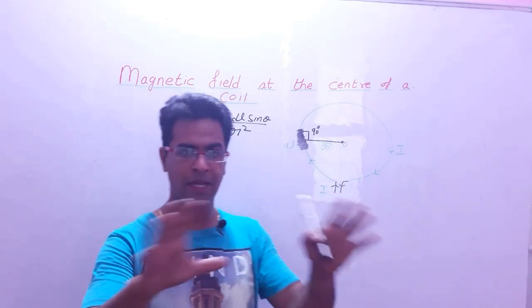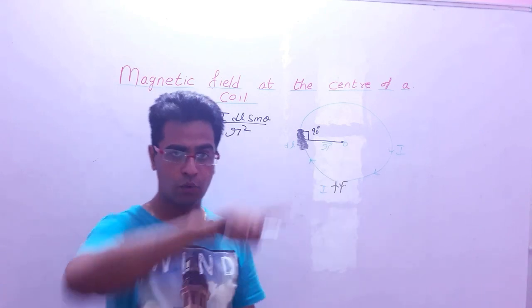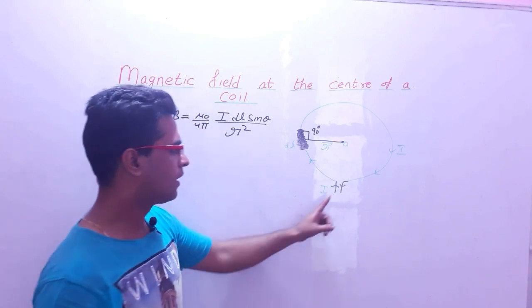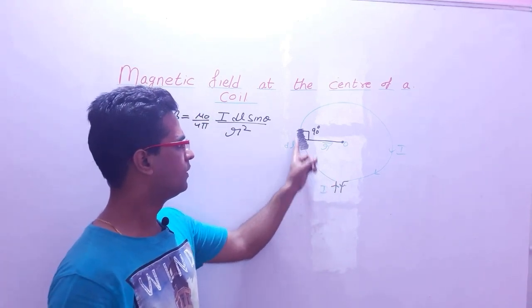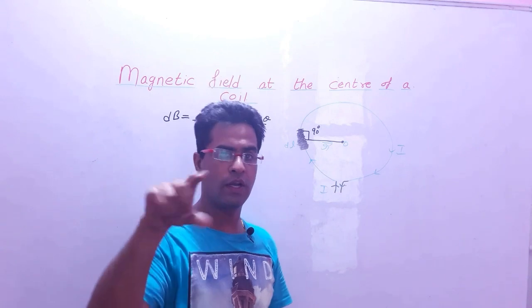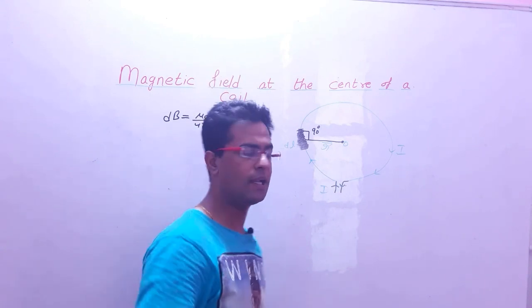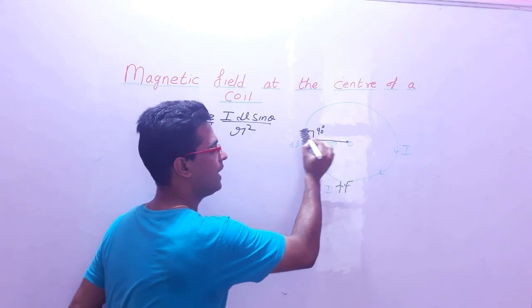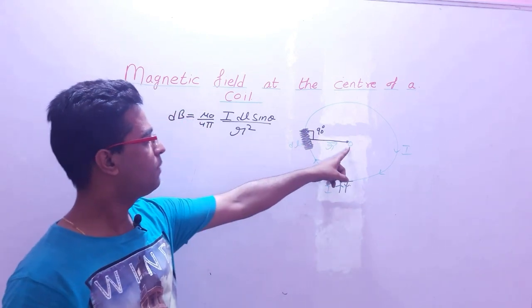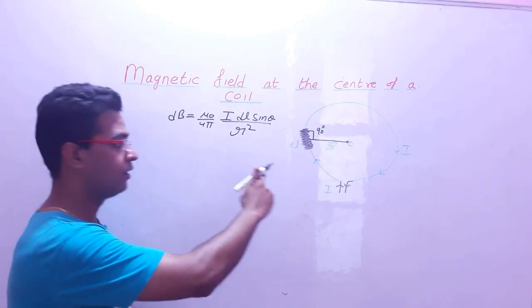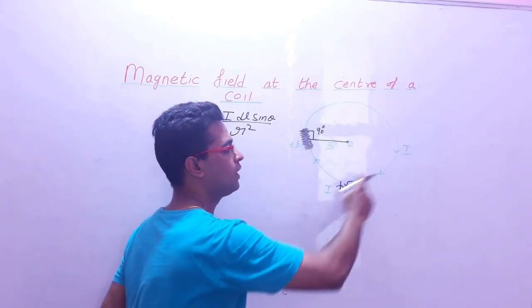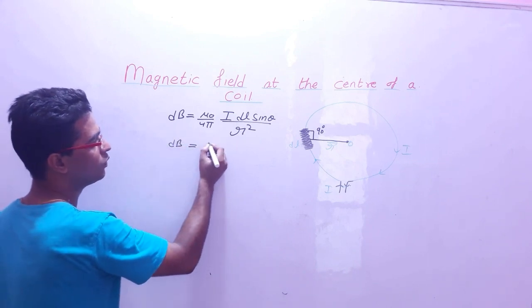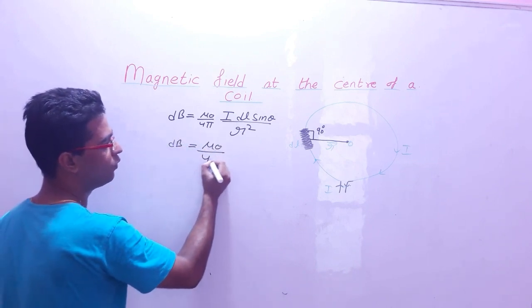सबसे पहले diagram लिखनी है। You will draw a diagram — एक circular coil ली, इस circular coil का radius r है, current I flow कर रहा है। इस पूरी circular coil का एक छोटा सा current carrying element लेना है — that will be dl। अब इस छोटे से current carrying element dl की वजह से center पे magnetic field कितना होगा।